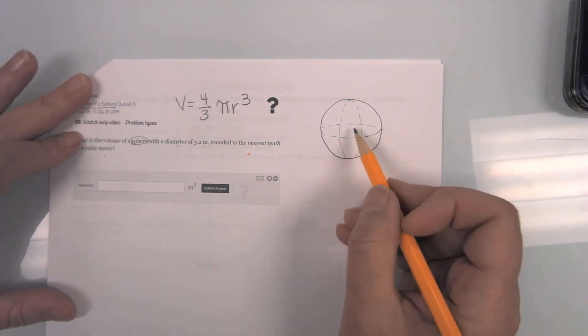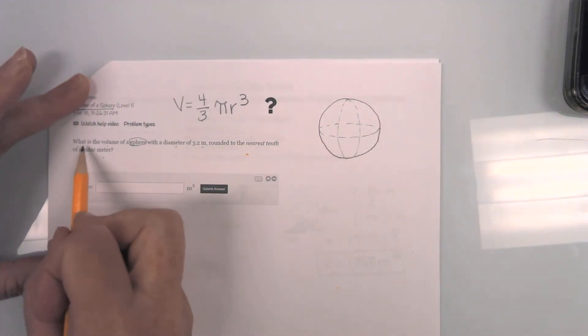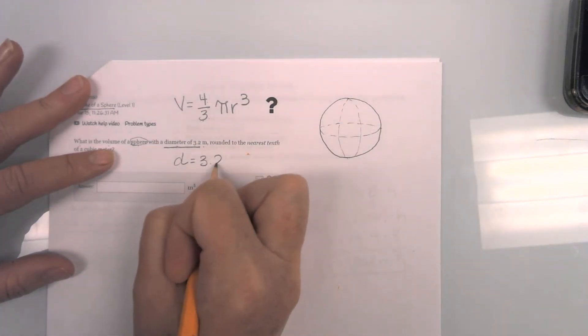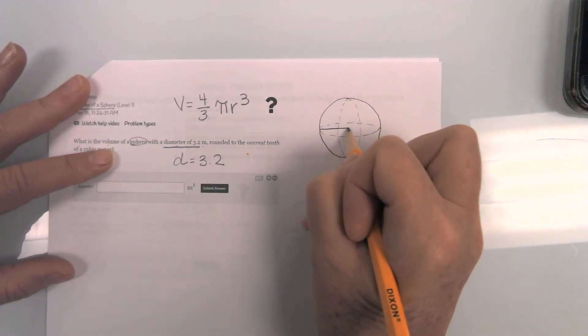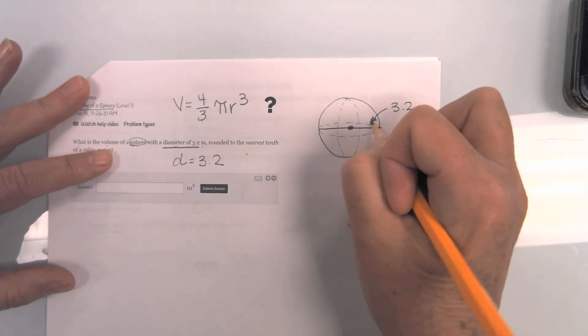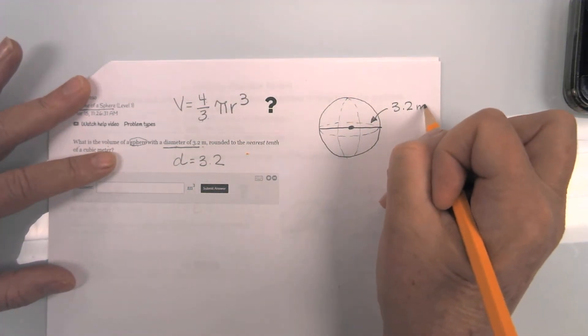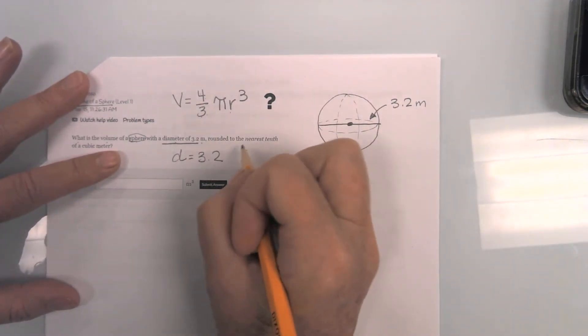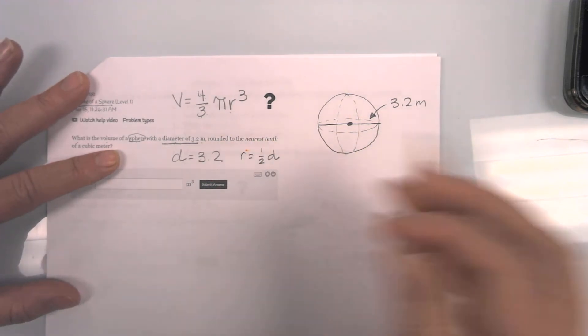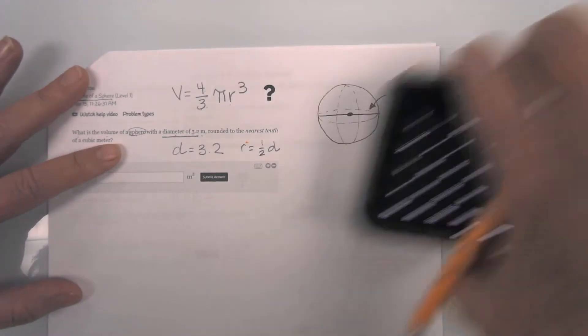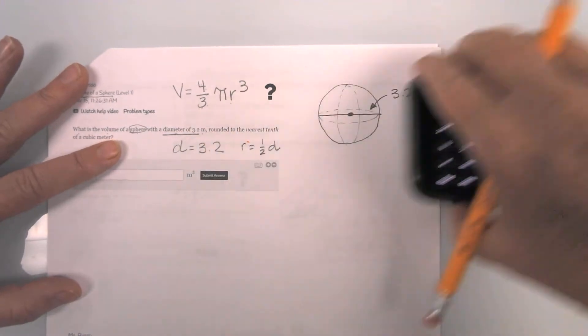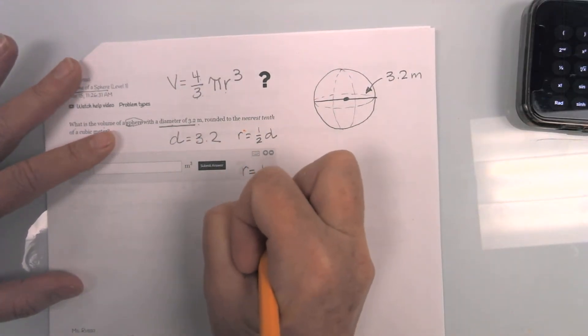So I am going to go ahead and plug in what I know. Diameter of 3.2. Well, I know diameter goes all the way across the circle. So my diameter is 3.2. The challenge is I don't need the diameter. I need the radius. Fortunately, I remember that the radius is half of the diameter. So I am actually just going to go over here to my calculator. I am going to do 3.2 divided by 2 and get 1.6. So my radius is 1.6.